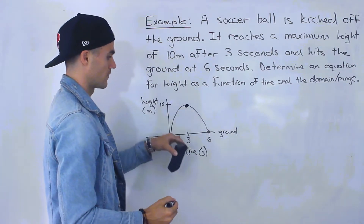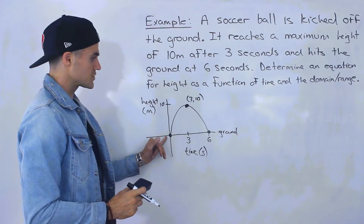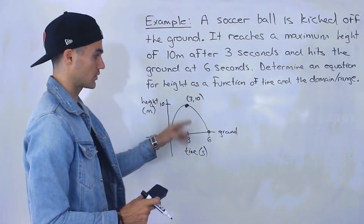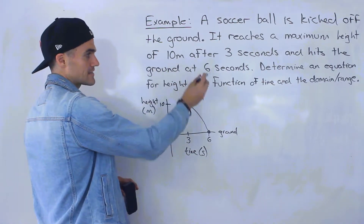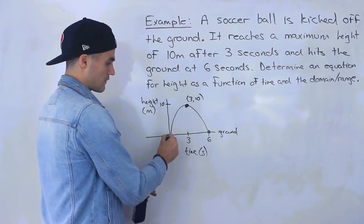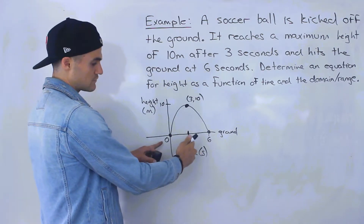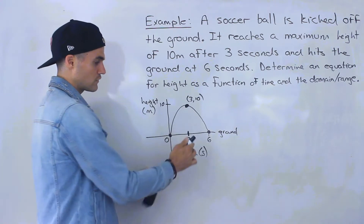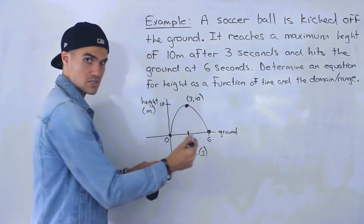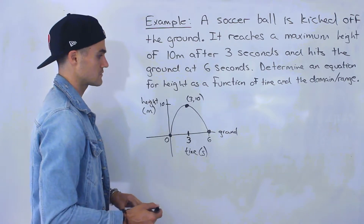The maximum point is at coordinates (3, 10). Because we start at the origin and we're given the maximum height, we actually didn't even need to be told it hits the ground at 6 seconds — we could have figured that out because a parabola is always symmetrical. With a t-intercept at 0 and a maximum at t = 3, we add a distance of 3 to get the other t-intercept. It always has to be symmetrical.